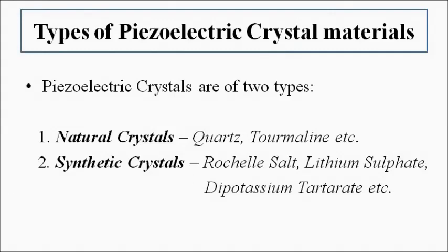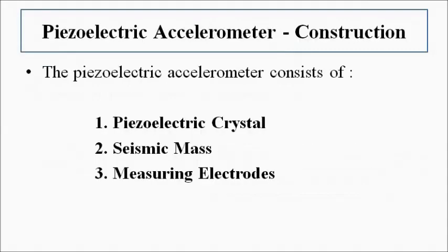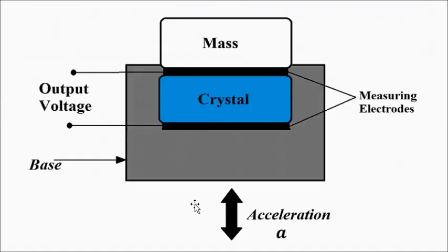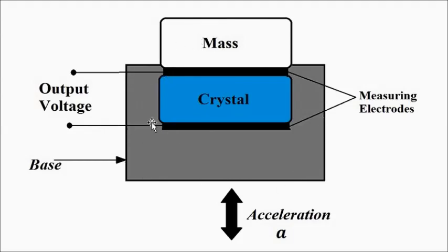The piezoelectric accelerometer consists of three main components: the piezoelectric crystal, which is the main component; the seismic mass, which is attached to the piezoelectric crystal; and the measuring electrodes, across which the output voltage or electric potential is taken out. The seismic mass and crystal assembly is firmly attached to a base — this is the complete constructional setup of the piezoelectric accelerometer.